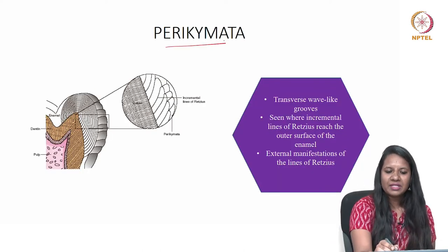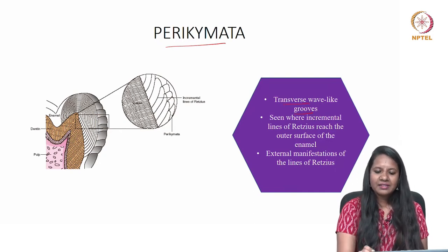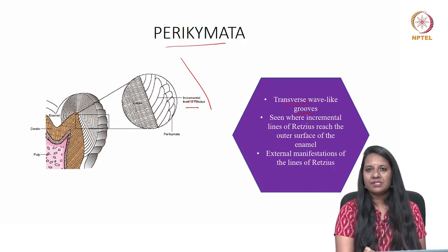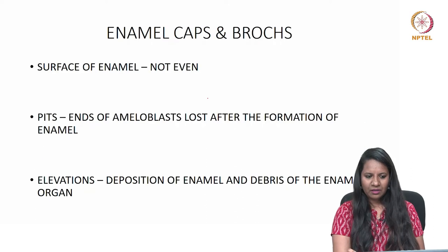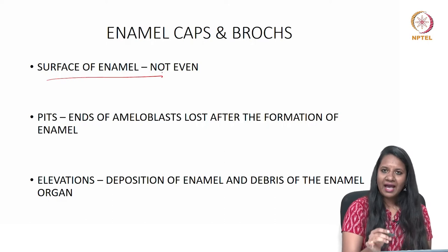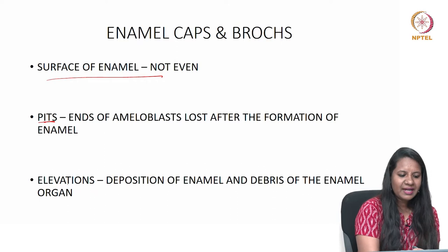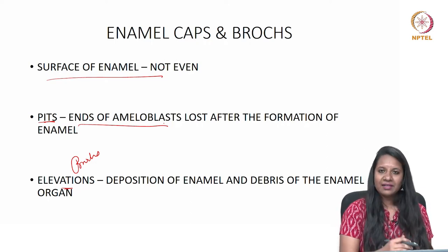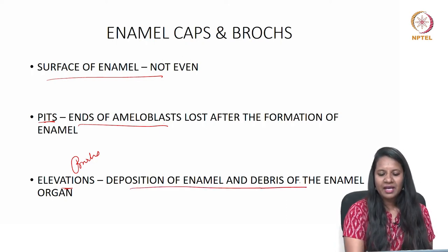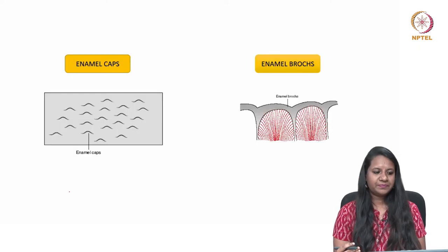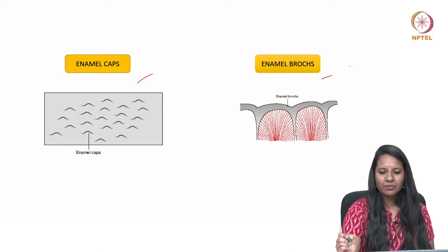Moving to perikymata, which are transverse wave-like grooves seen where the incremental lines of Retzius reach the outer enamel surface — simply called the external manifestation of striae of Retzius. Moving to enamel caps and brookes: the surface of enamel is not even but has dips and elevations. A dip is a pit, caused by loss of the ends of ameloblasts after enamel formation. An elevation, or brooke, is caused by deposition of enamel and debris of the enamel organ. Thus, the enamel surface has either pits or elevations.